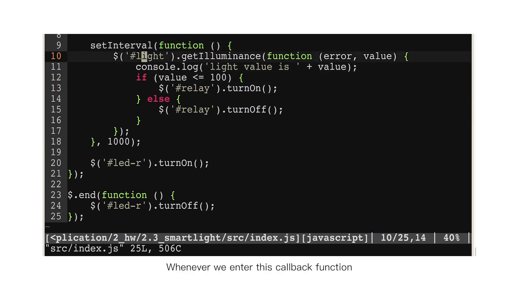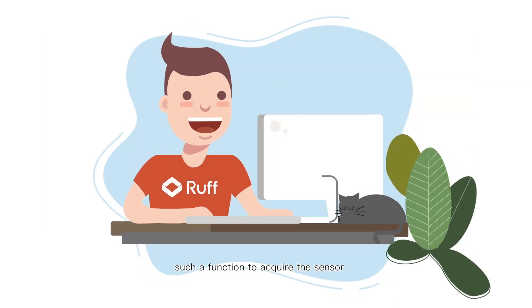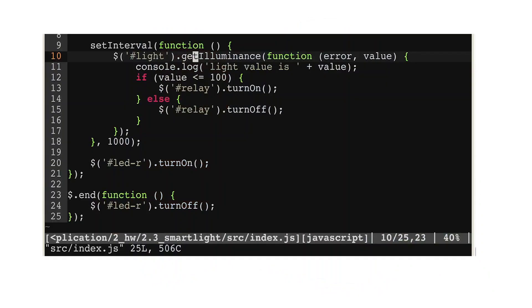Whenever we enter this callback function, we need to call this light such a function to acquire the sensor. And this function will return us the most important value, which represents the illumination intensity.